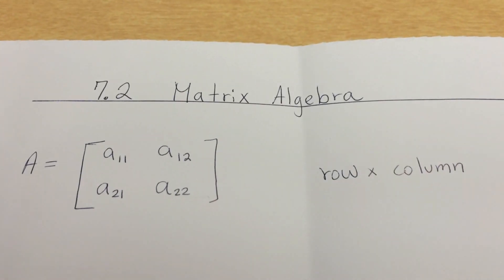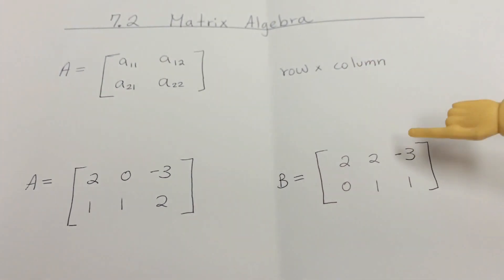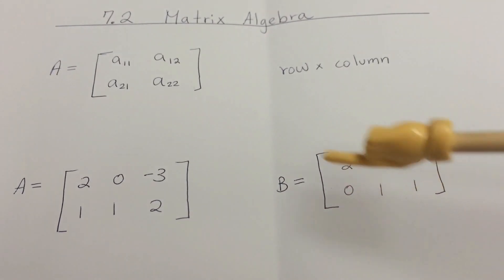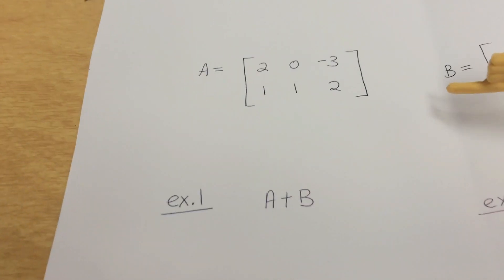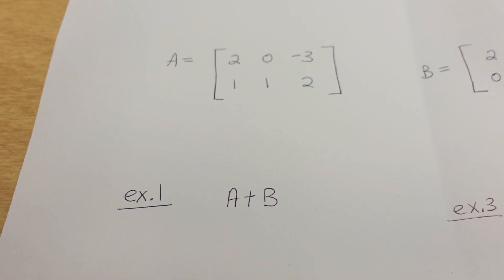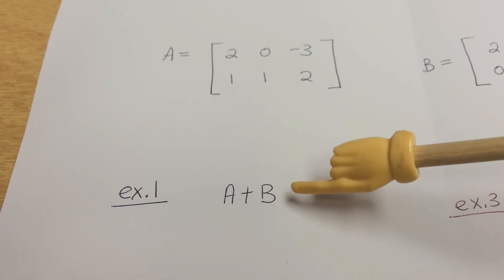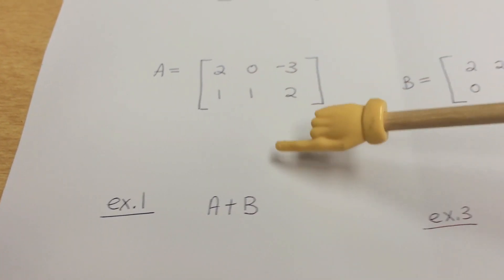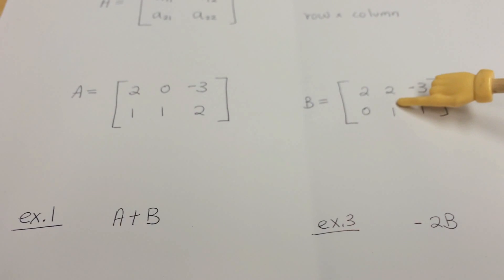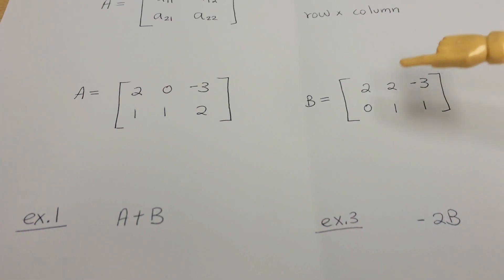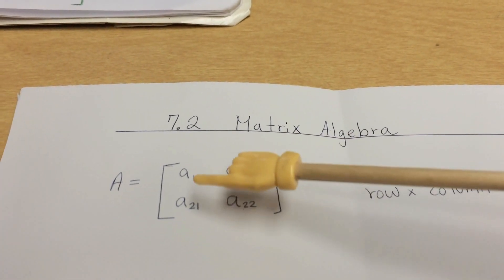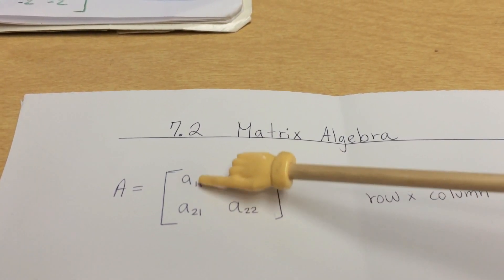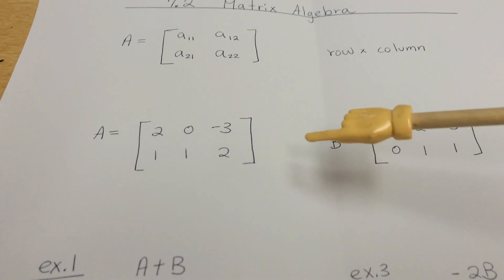A single bracket array is called a matrix; multiple are called matrices. When we have matrices, we perform operations on them. For addition, we take matrix A and add it to matrix B. The key rule is that elements must be combined by matching position — first row first column with first row first column — similar to combining like terms.